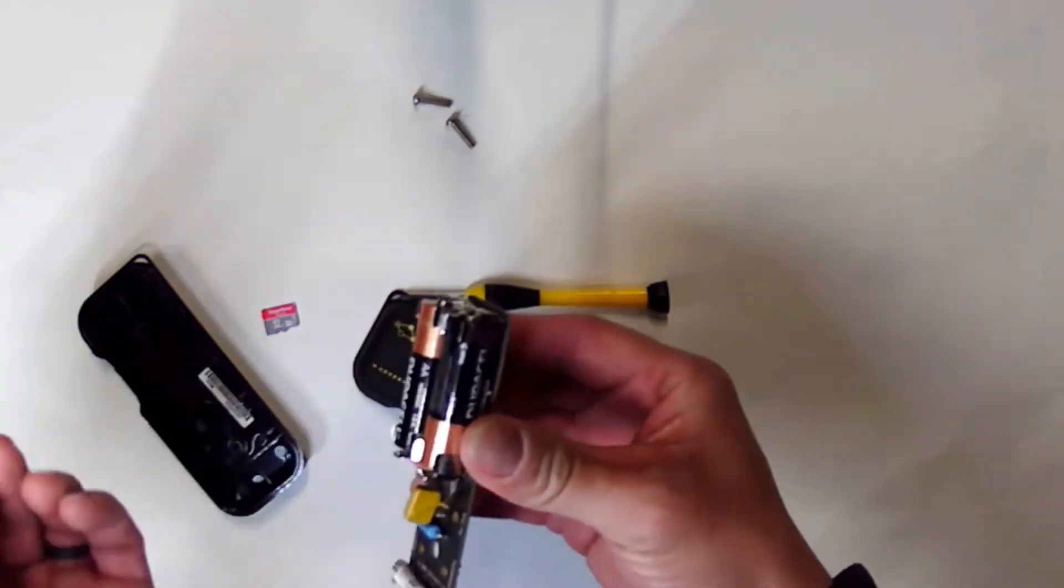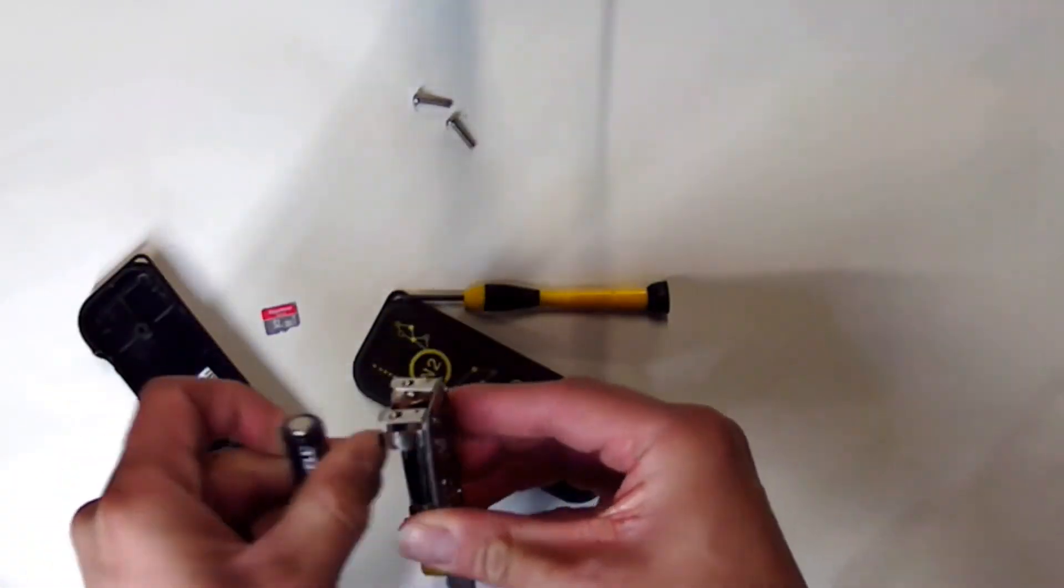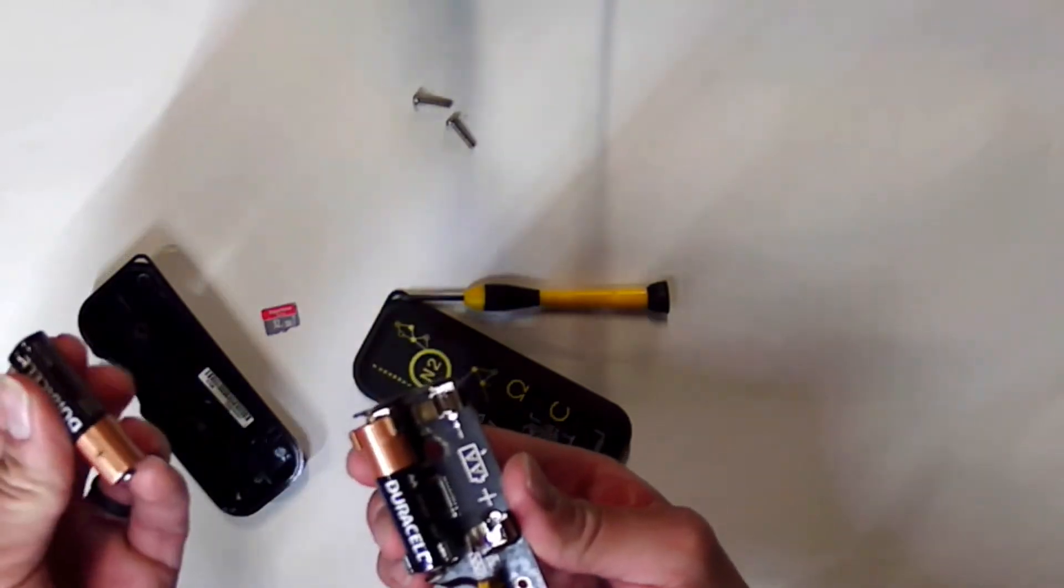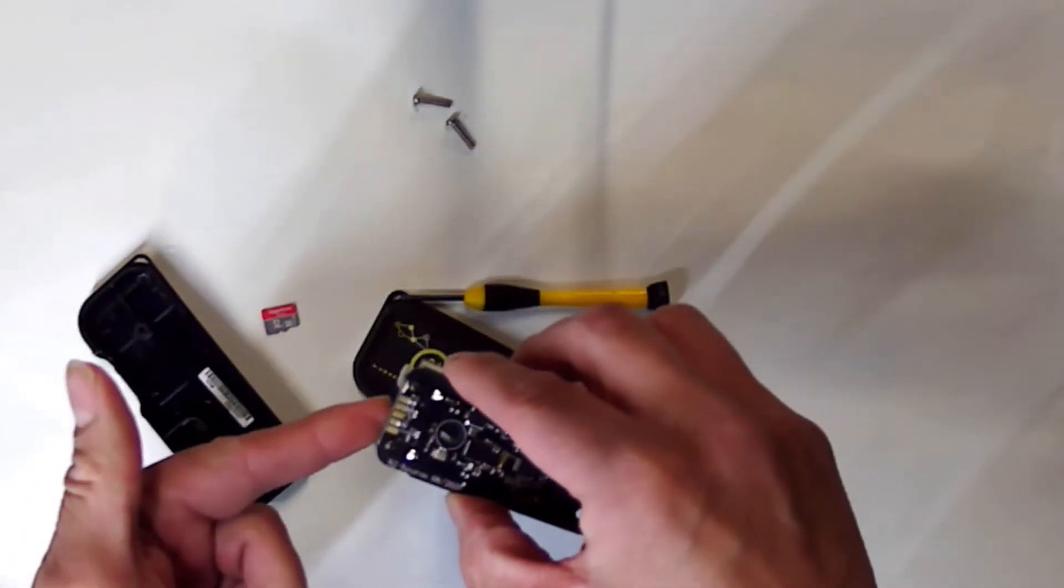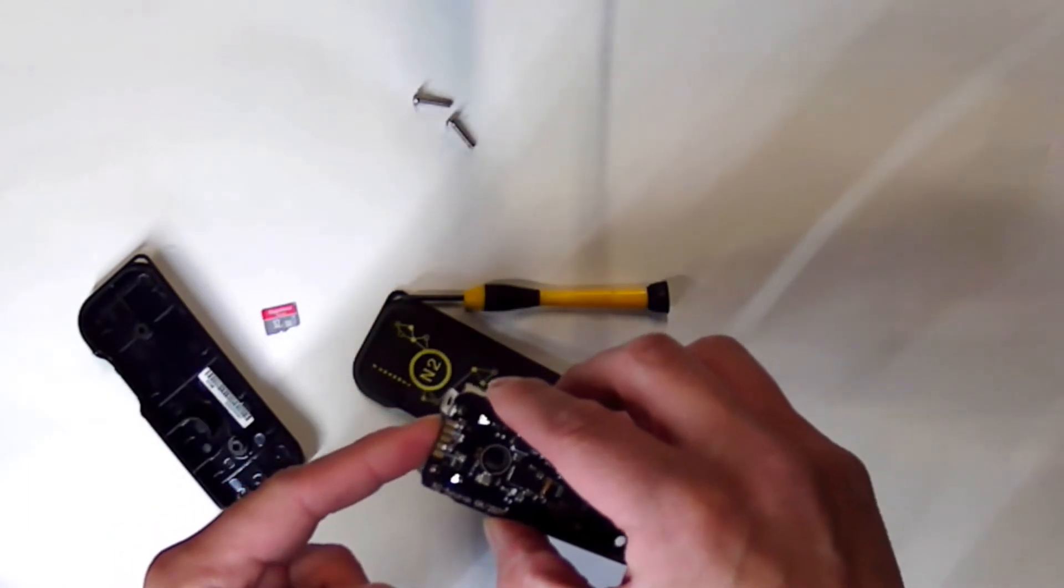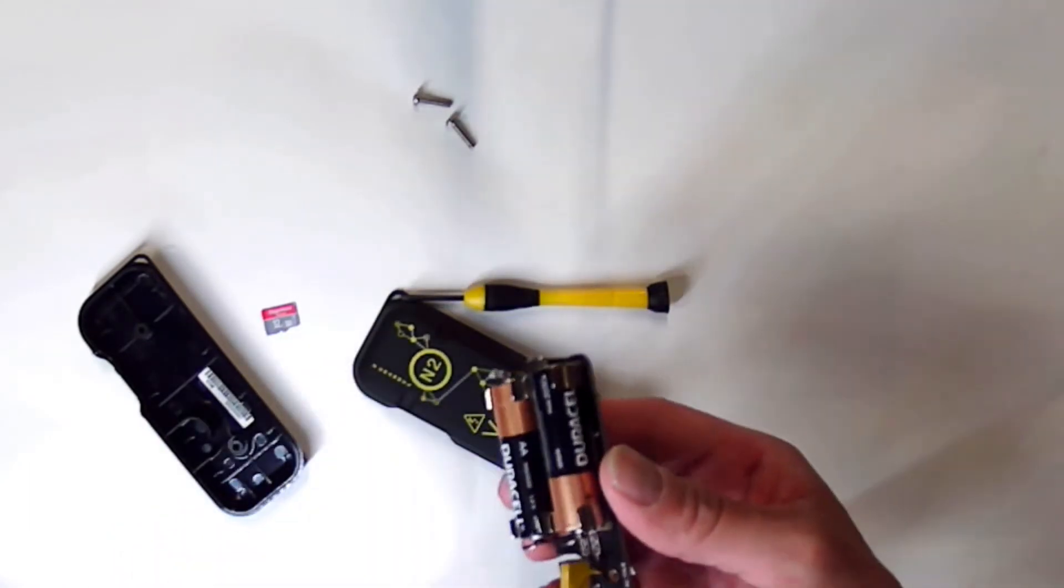So once that's out, if you don't have batteries, go ahead and install them. Just to show you, they are showing polarity requirements, so make sure you follow that. And then of course you should see your LED turn on once the board is active.